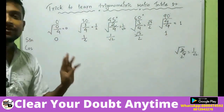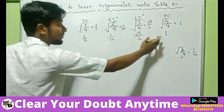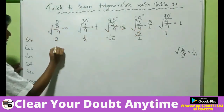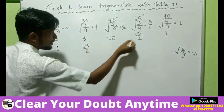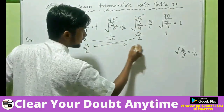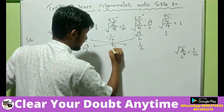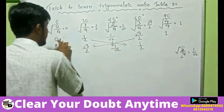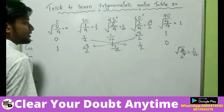To get the values of cos, we just need to alter the series — write 1 here, then root 3 by 2 here, then 1 by root 2, then 1 by 2 here, and here will be 0.